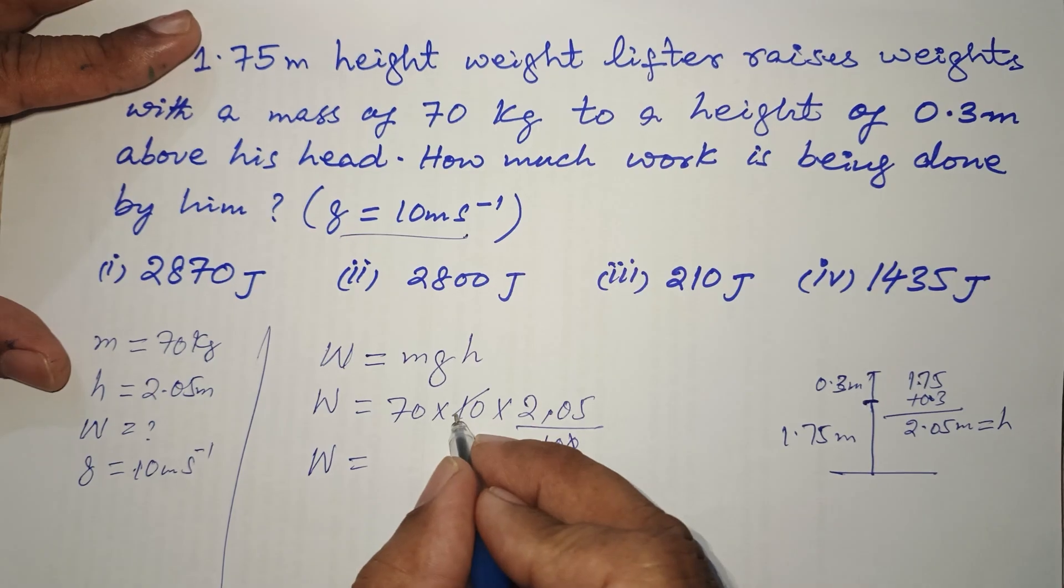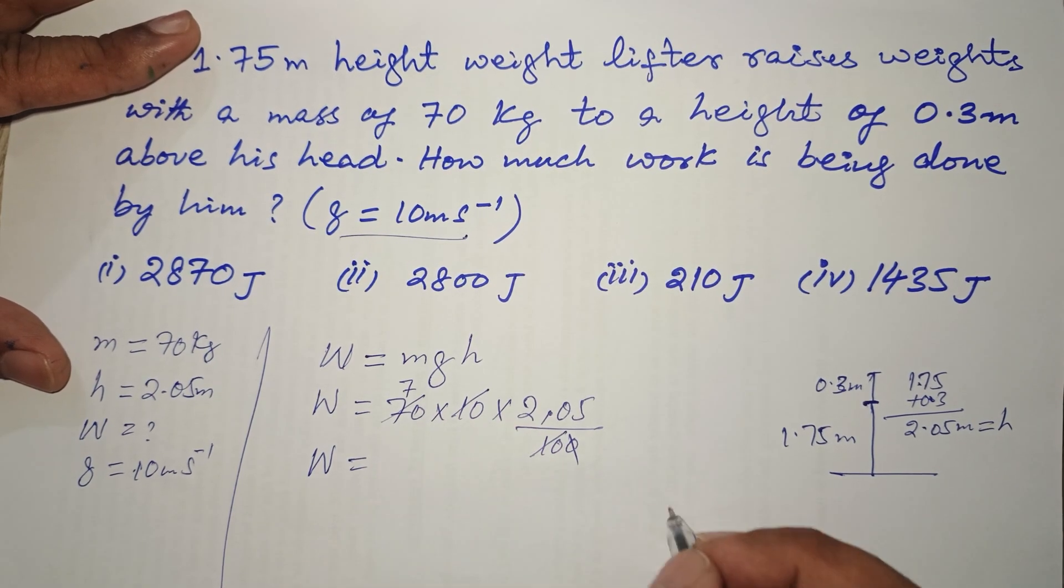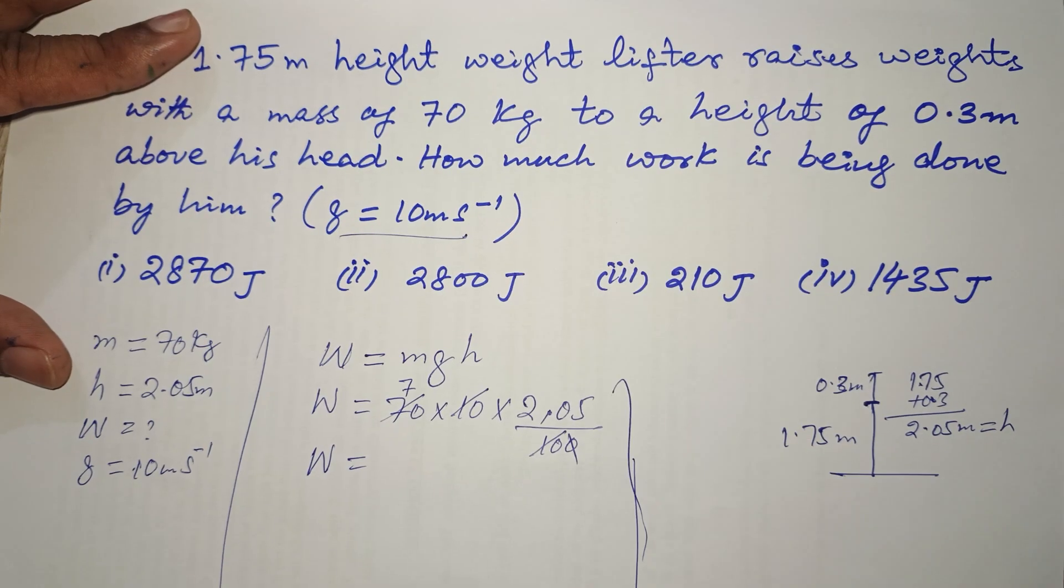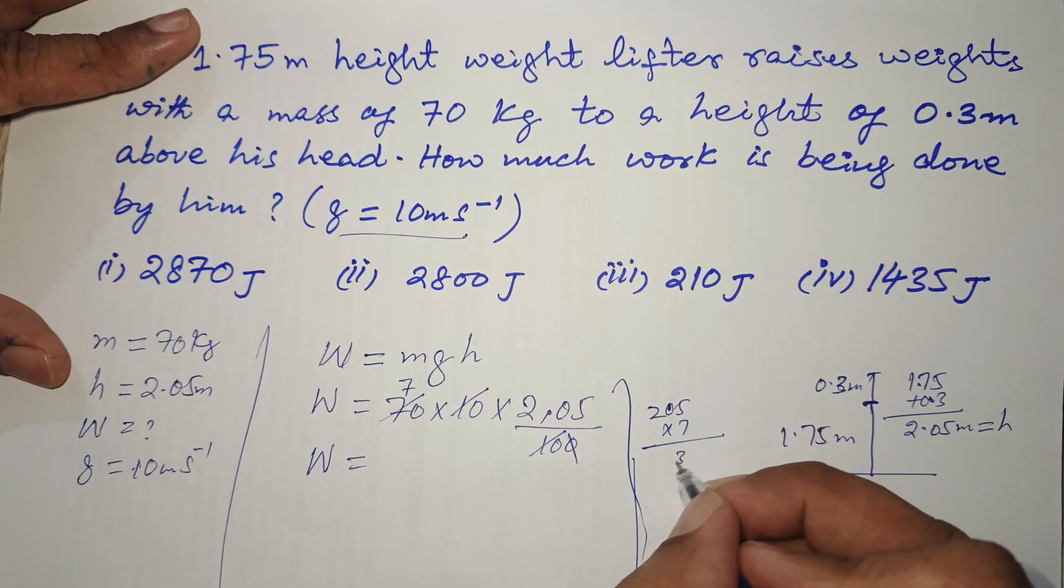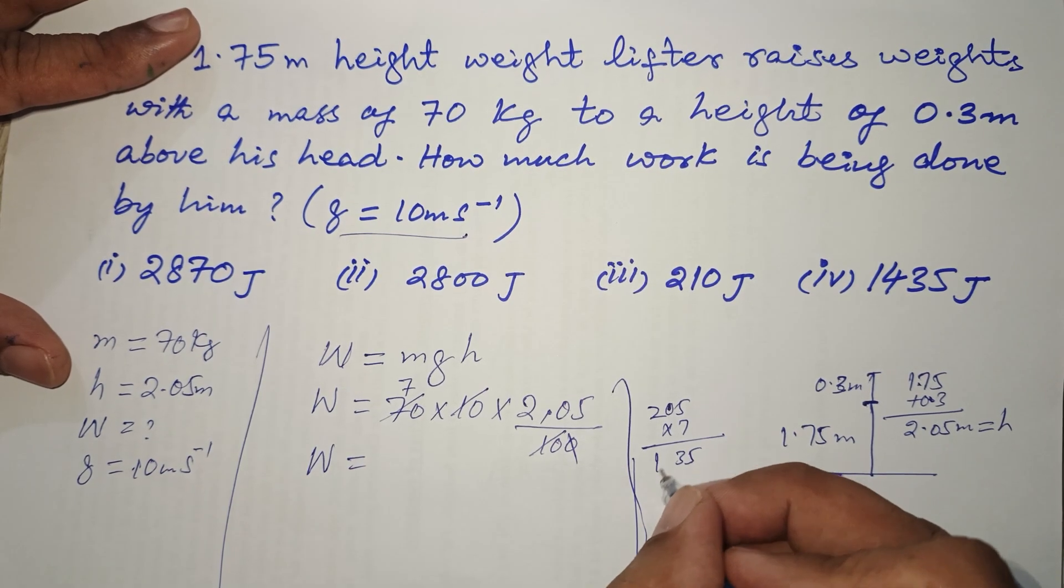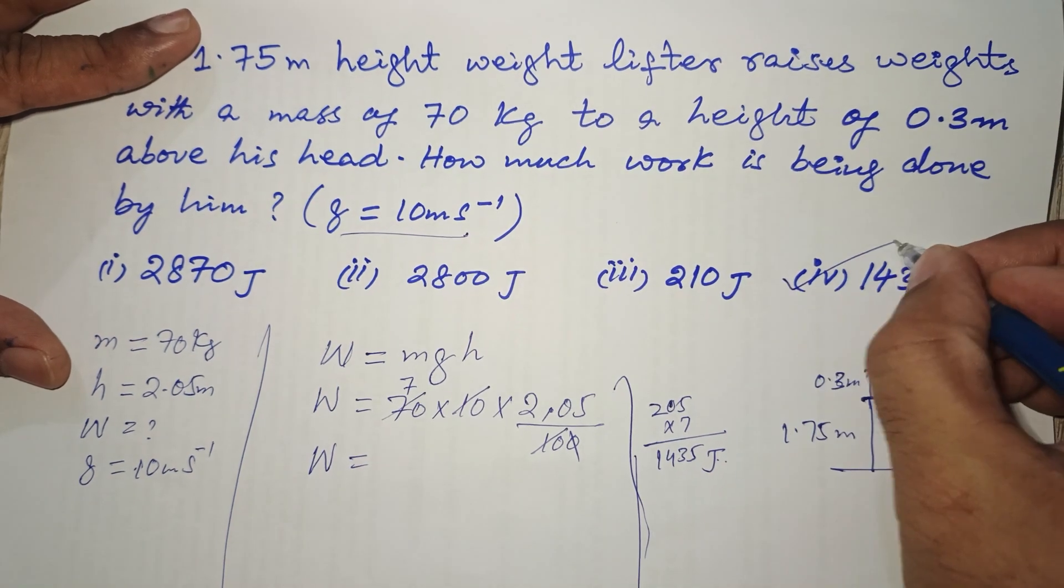So W equals, remove this decimal we'll get 100, zero cancels with 10, and this 10 was a 10, 10, 7 to 70. So we have to multiply 205 with 7: 7, 5 to 35, and 2, 7 to 40. So 1435 joules is the correct answer.